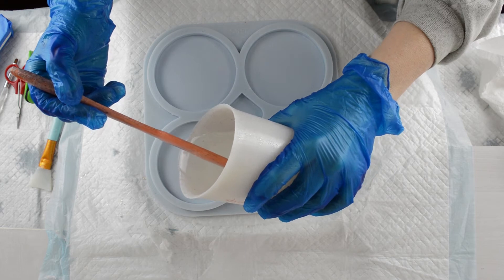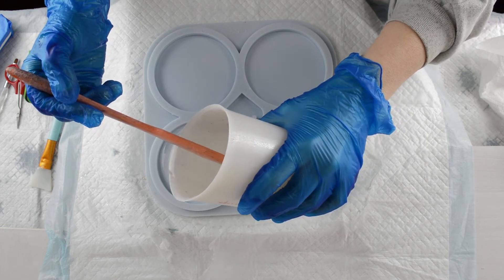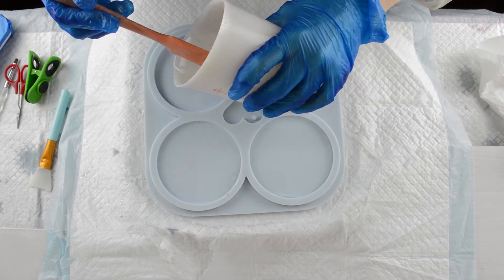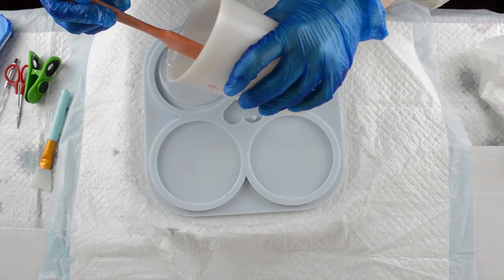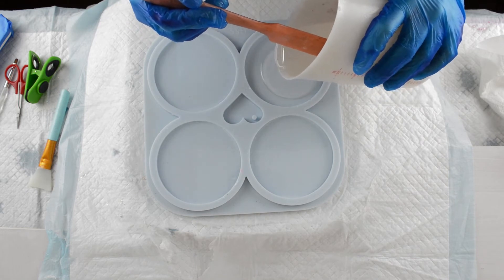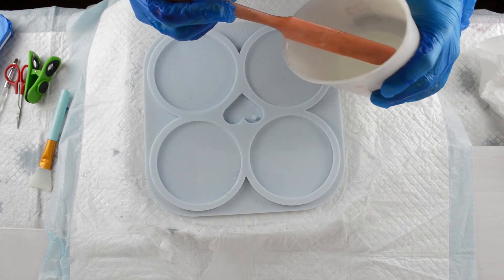So I'm just pouring some clear resin into the mould. The mould is from Molds and Shapes. It's just a round coaster mould. It is available in holographic, but I'm just using the plain round.